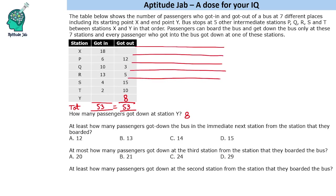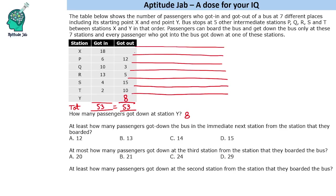For every station, we mark how many passengers got in and find how many could have got down at the immediate next station. At the starting station X, 18 people got in, so they can get down at P, Q, R, S, T, or Y. The total for those 18 people across all those stops must equal 18. For example, maybe 2 got down at one stop, 3 at the next, 5 at another — these are just possibilities, but the total must always be 18.